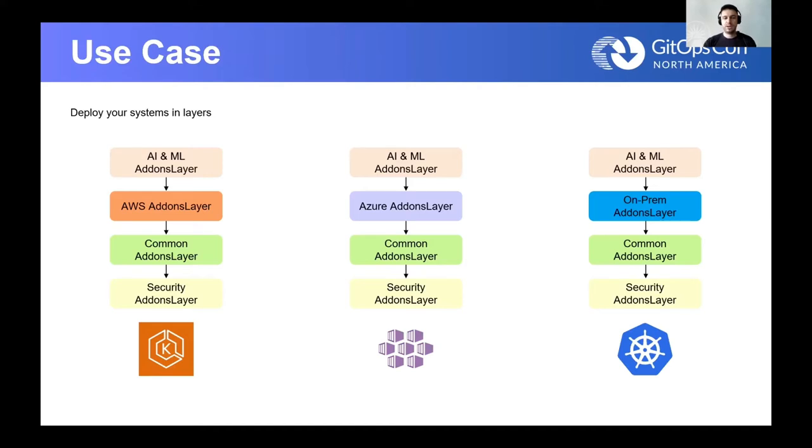It allows for reusability of components and collaboration between different business units and teams to improve the platform experience. For example, the security layer can be developed and tested by a dedicated team of cyber security specialists. Once a new version of this layer has been released, the platform developers can integrate that in their systems as a dependency. They will have the confidence that that layer was tested and certified to be working on a specific Kubernetes version and on all the cloud providers.